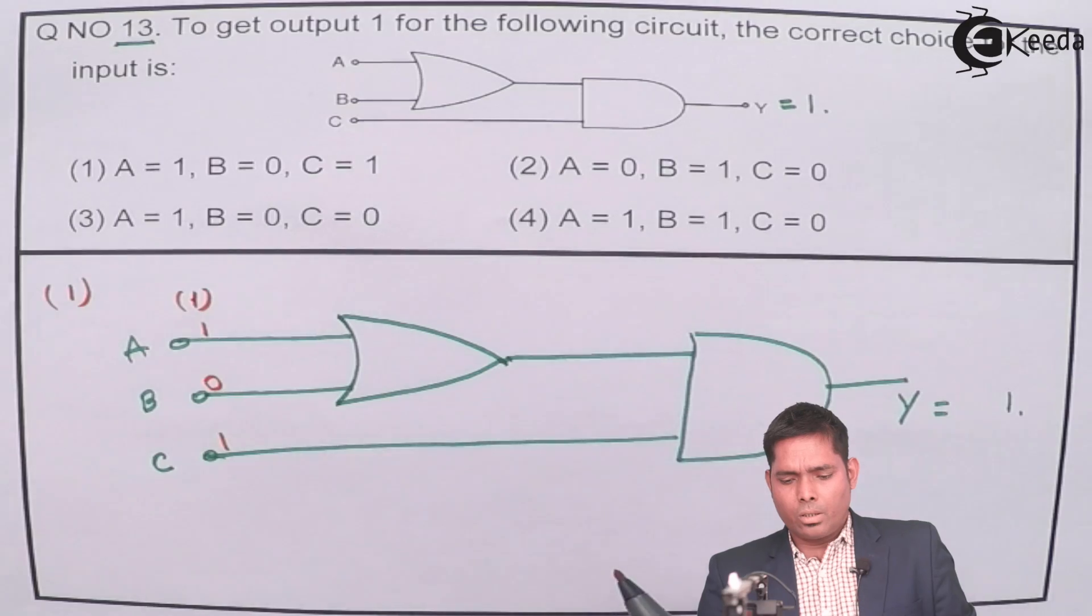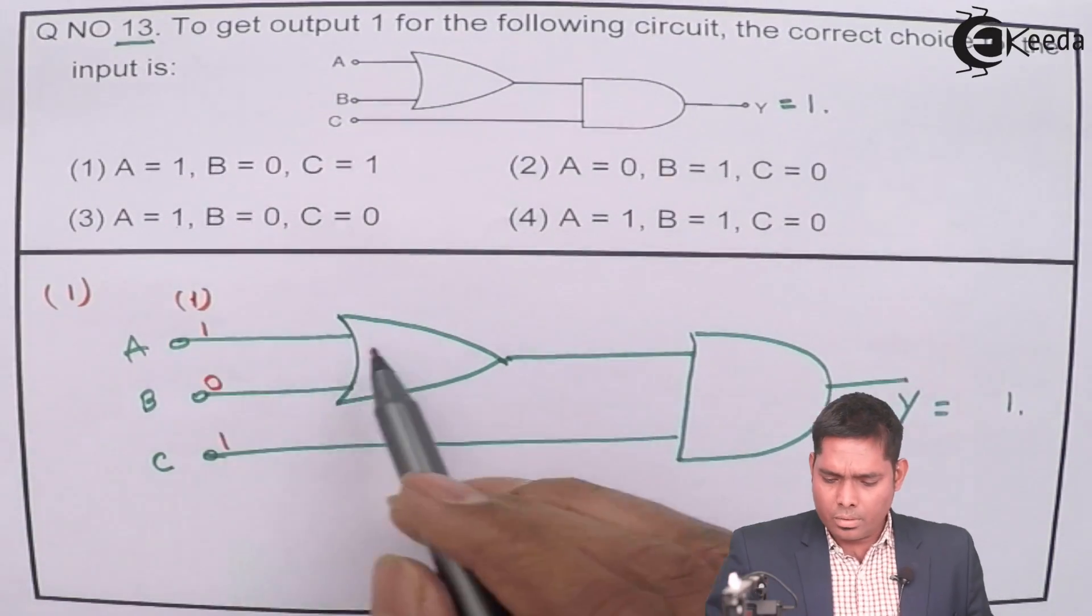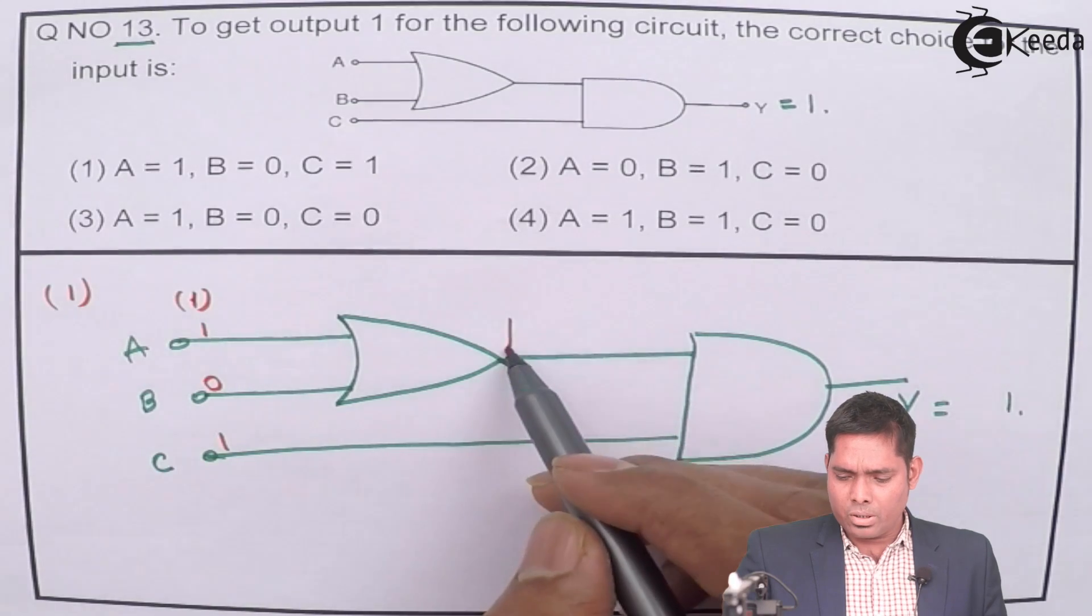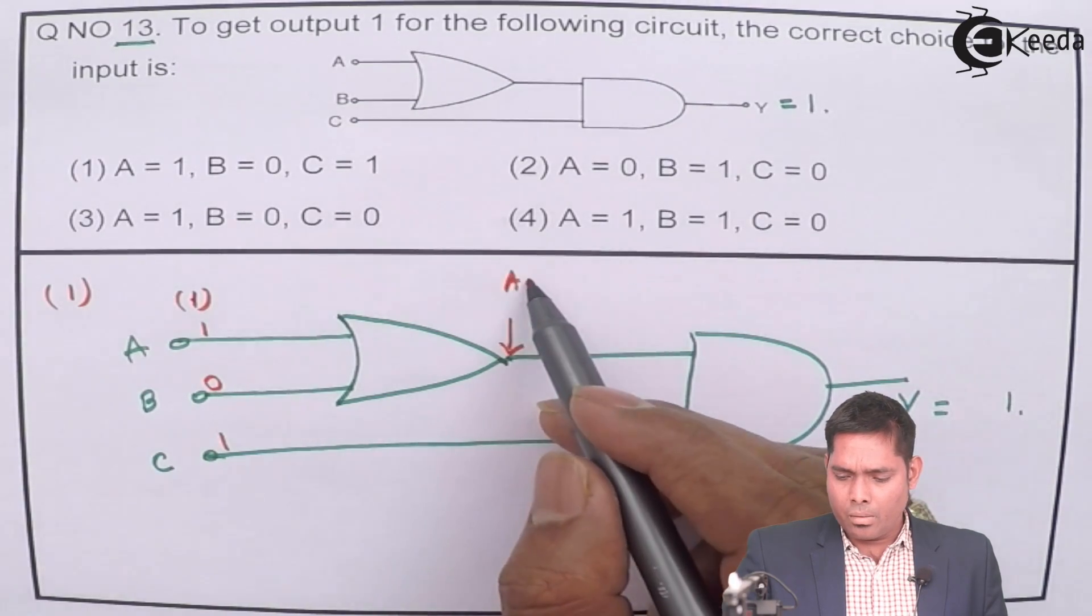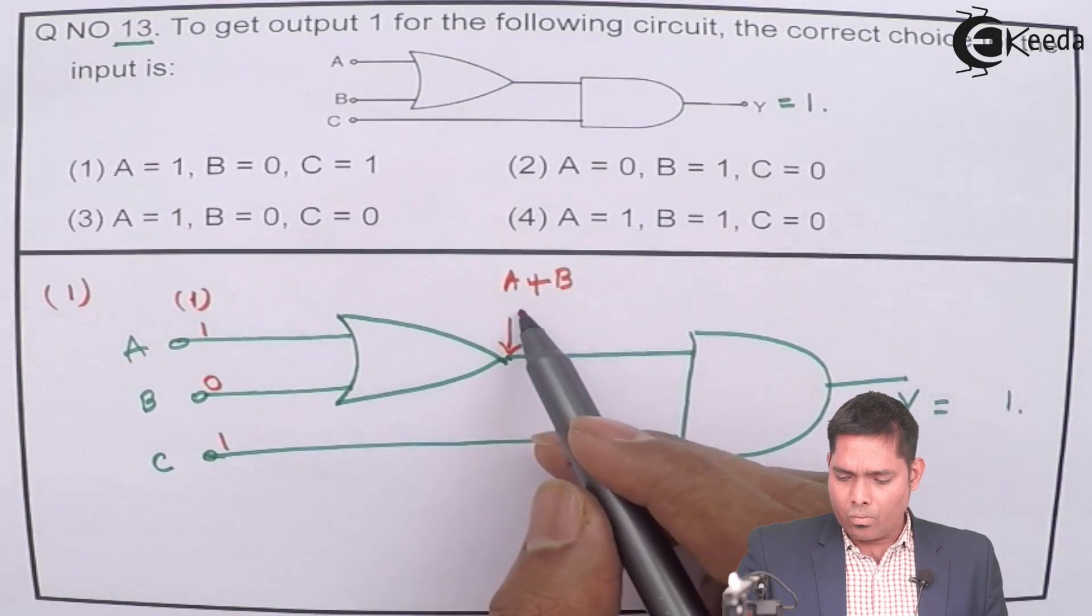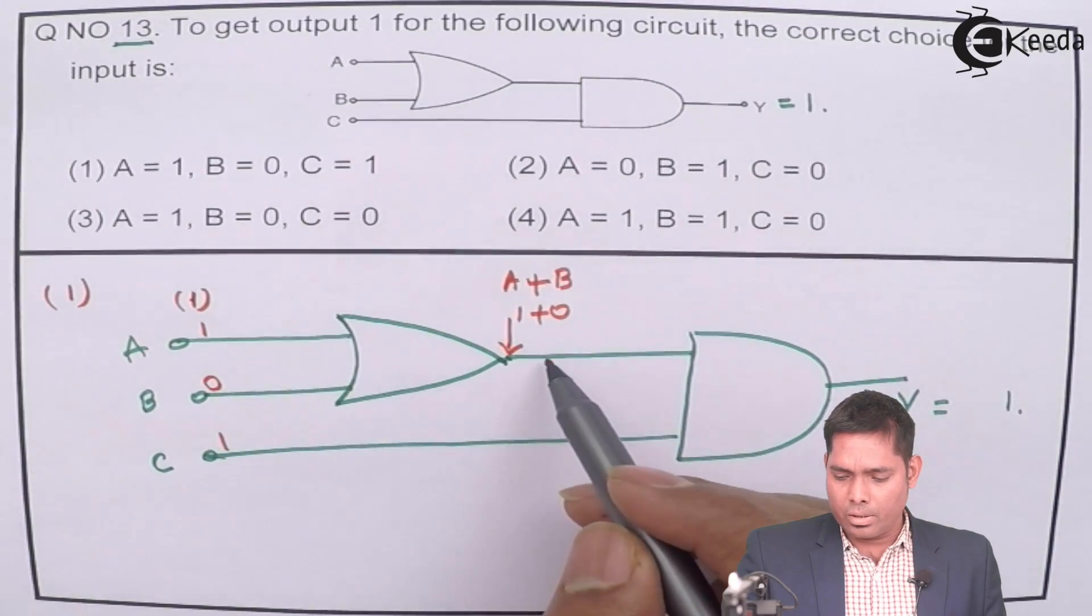Then what am I getting? If I put A is 1, the OR gate operation will be A plus B. And here I will get 1 plus 0. The answer is 1.